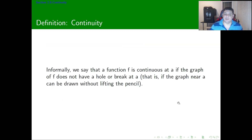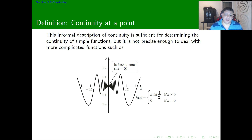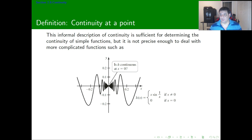Informally, we can say that a function F is continuous at a point A if the graph of F does not have a hole or a break at A — meaning the graph near A can be drawn without lifting the pencil. The informal description of continuity is sufficient for determining the continuity of simple functions, but it's not precise enough to deal with more complicated functions.